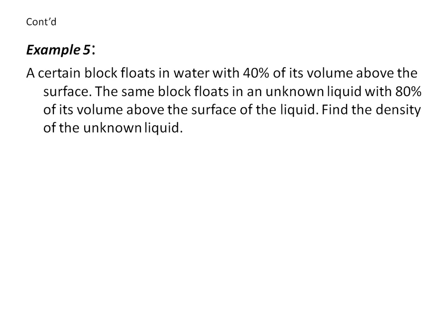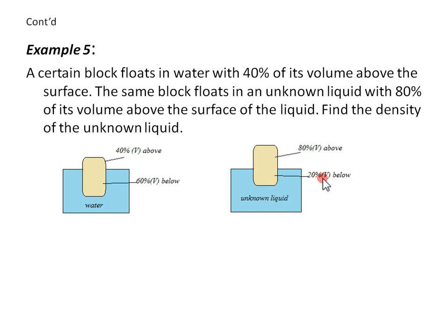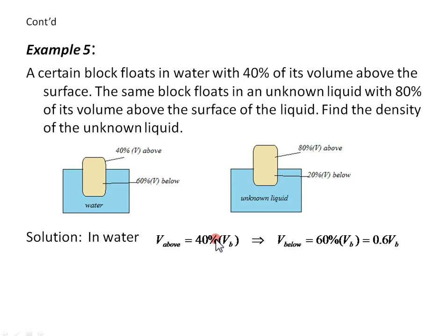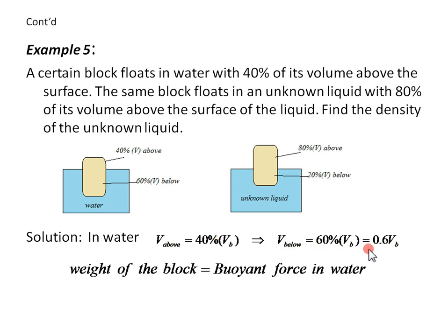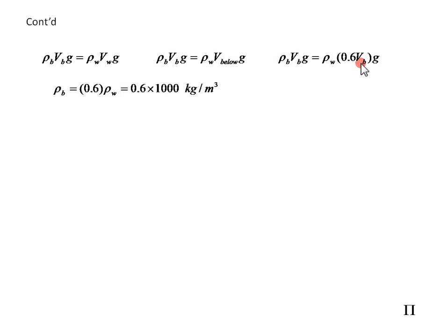The last question: a certain block floats in water with 40% of its volume above the surface of the liquid. Find the density of the unknown liquid. Here the object floats in water with 40% above, meaning 60% below. And in the unknown liquid, 80% is above and 20% is below. For the case of water, weight of the block equals buoyant force in water: density of body times V_B equals density of water times 0.6 V_B. Cancelling g's and substituting values, we get density of the body to be 600 kilograms per cubic meter.